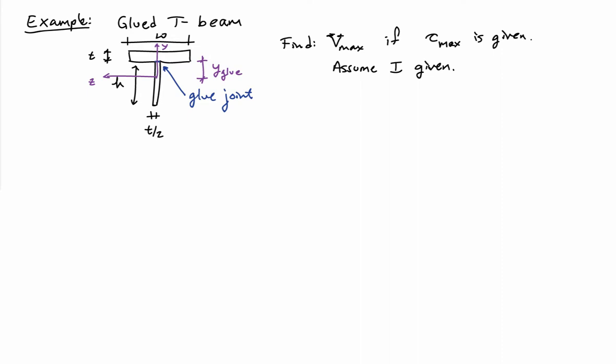So this is the setup. Now, the shear stress at the glue joint is going to be VQ over the thickness divided by the moment of inertia. The thickness at the glue joint is t over 2, and this value needs to be less than tau max.